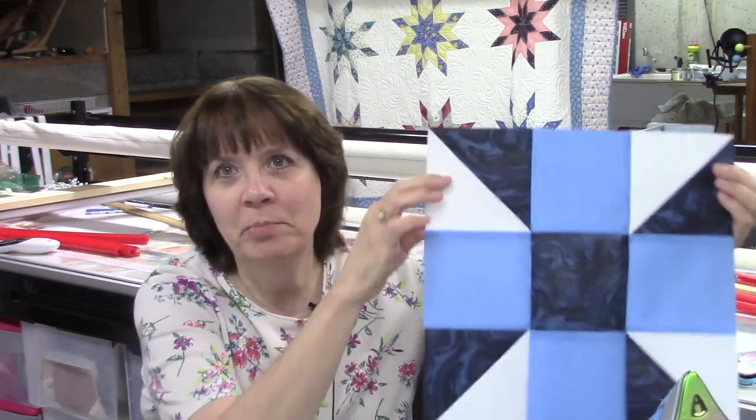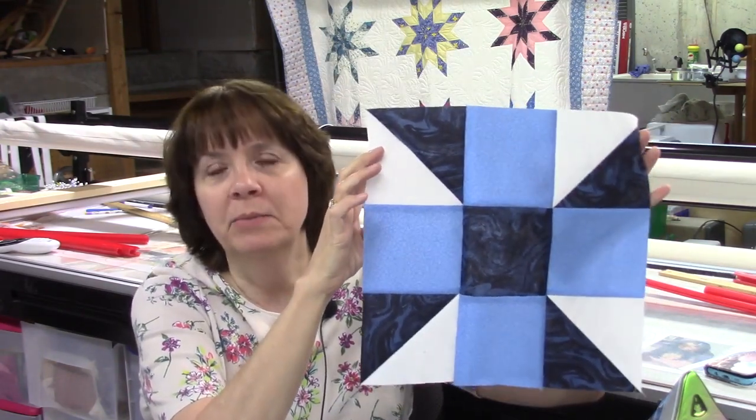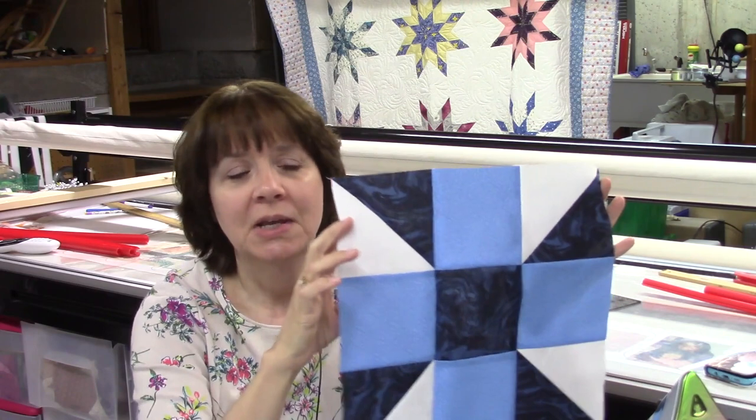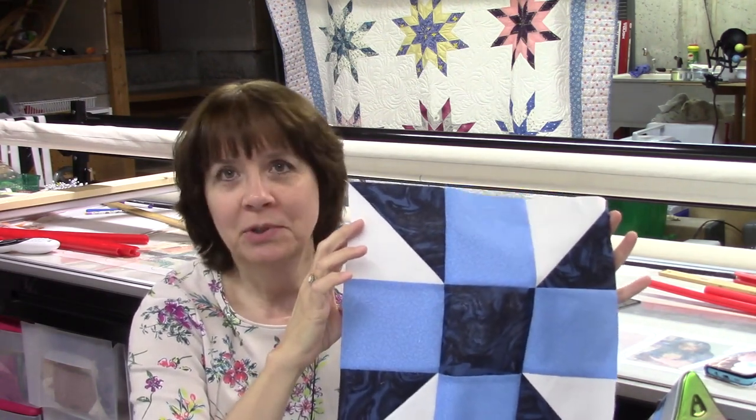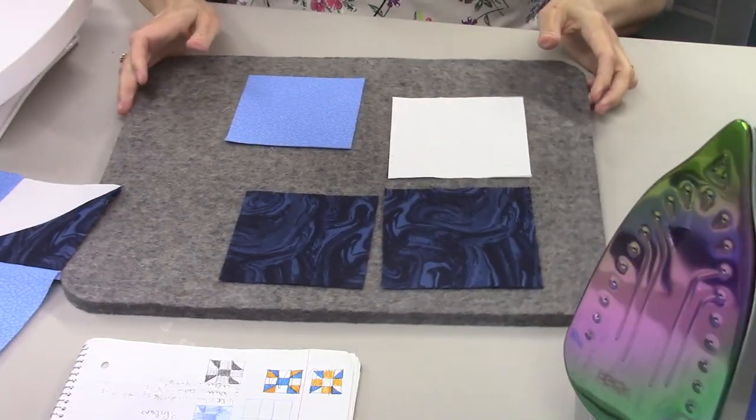Hi everybody, it's Susan from Sunrise Quilt Studio and welcome to week 31 of the stash buster block series. Our block today is called Calico Puzzle. It's a 12 inch block made with half square triangles and squares. This one is really simple, goes together really fast, and I think you'll enjoy it.